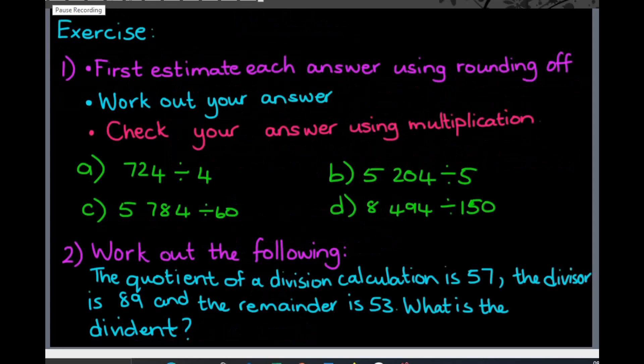Here is a short exercise that you can try. Please pause this video after I give the explanation and then I will give the answer straight after. For number 1, we need to first estimate each answer by using rounding off, then work out our answer and check our answer using multiplication. We have four sums to work out. For number 2, the quotient of the division calculation is 57, the divisor is 89, and the remainder is 53. We need to work out what is the dividend — basically, what number did we originally start with. Pause the video now to do the exercise.